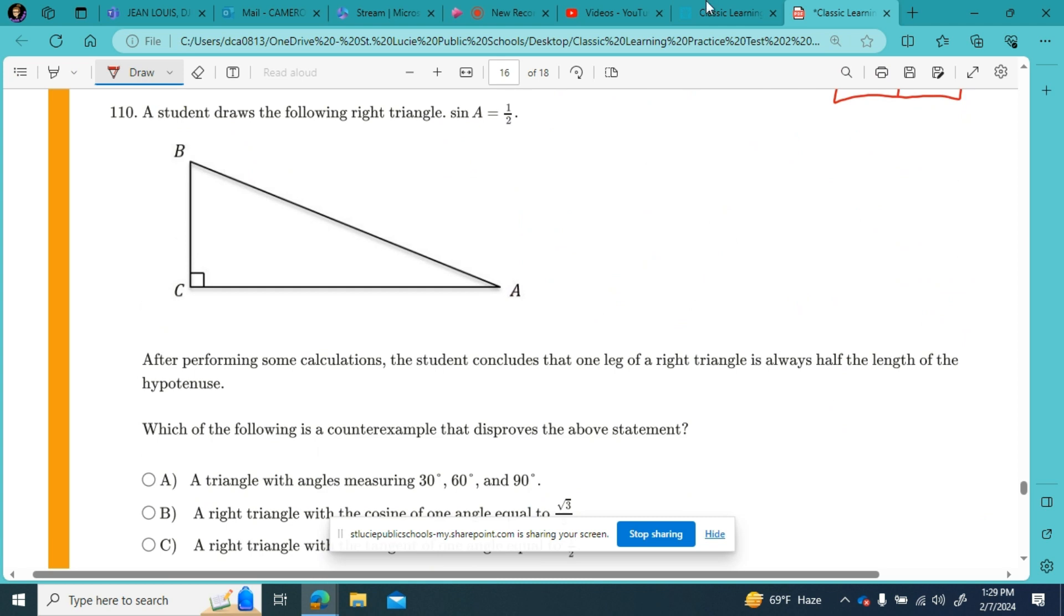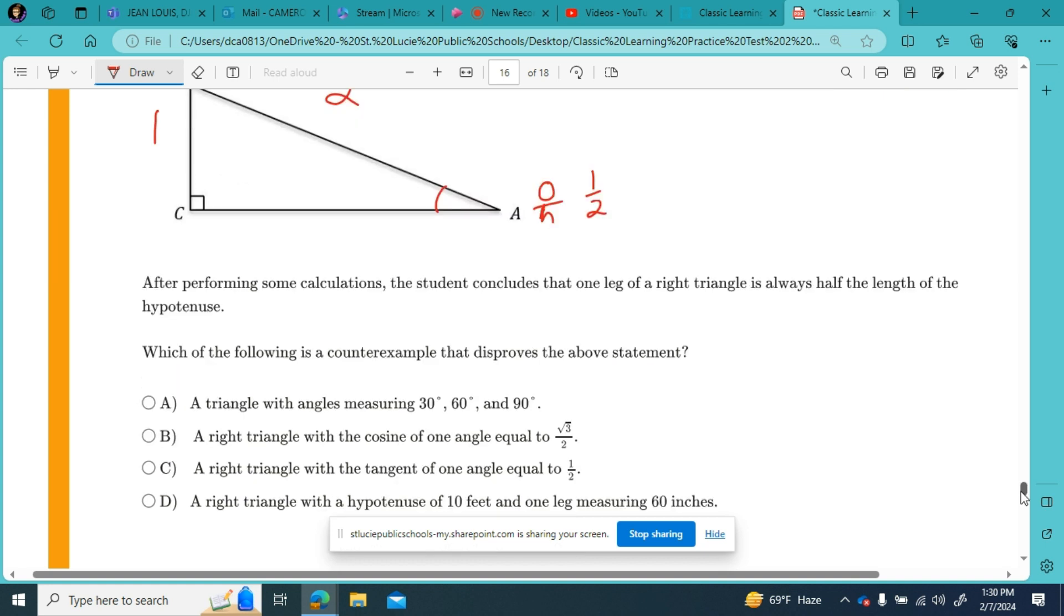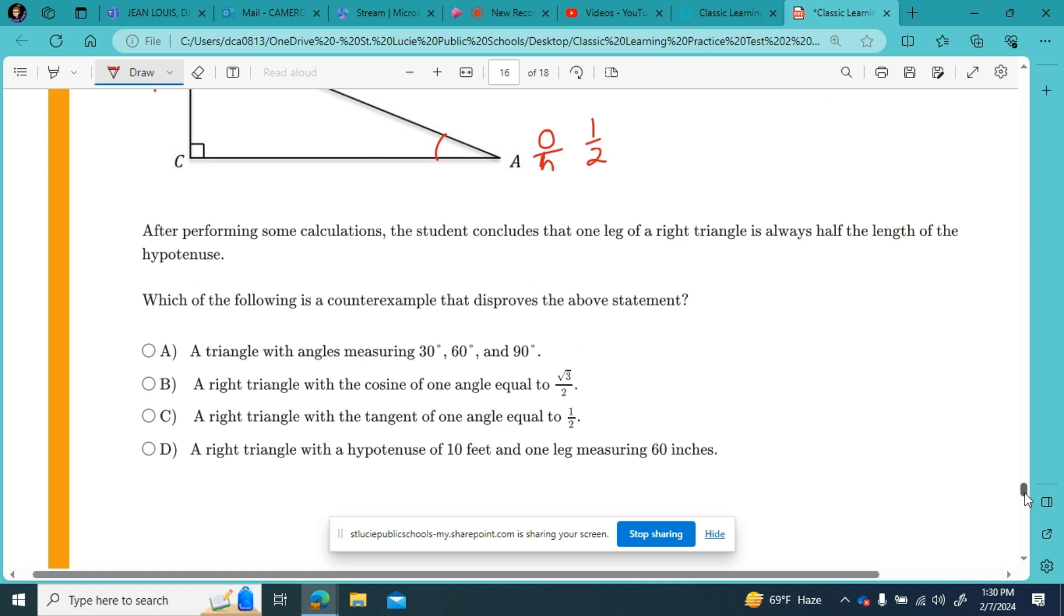And question number 110. A student draws the following right triangle. The sine of angle A is 1 over 2. Sine, so opposite over hypotenuse. Of angle A, my opposite side is 1, hypotenuse across from the right angle is 2.